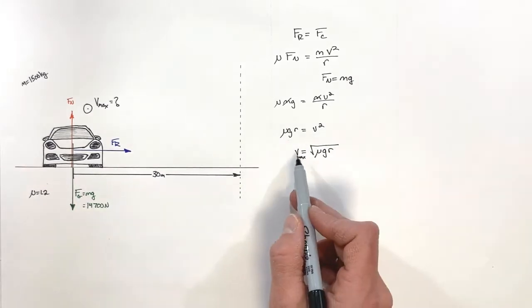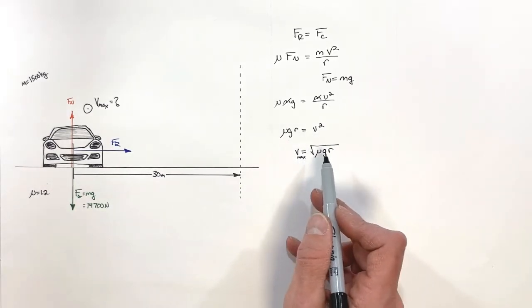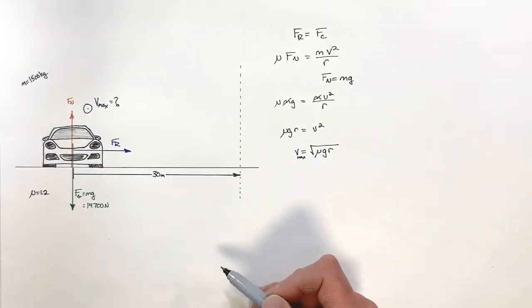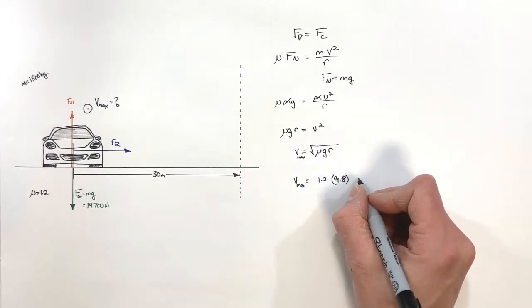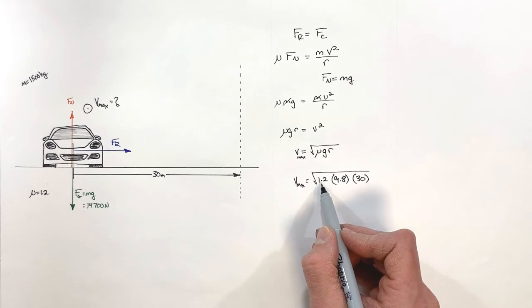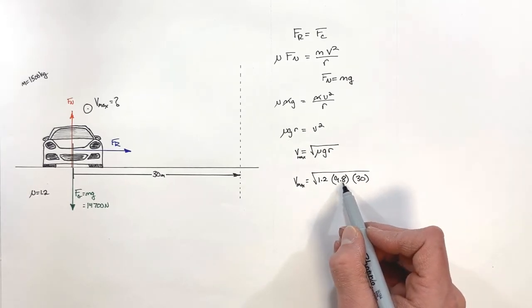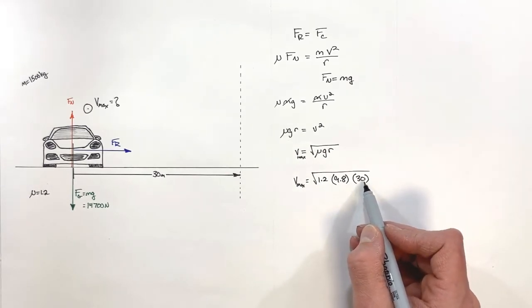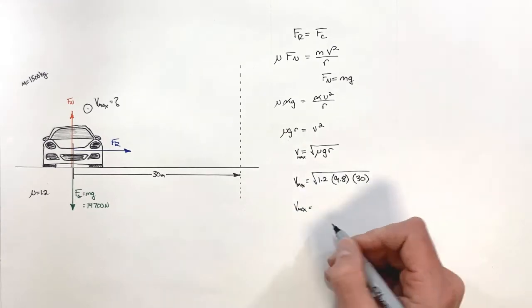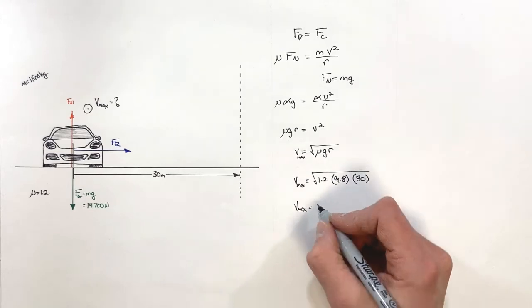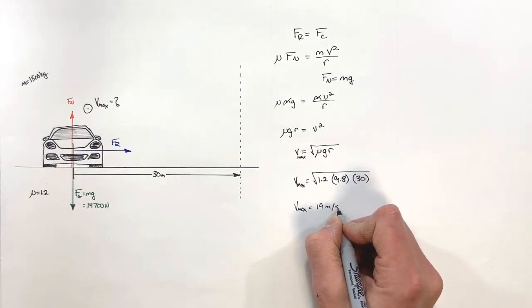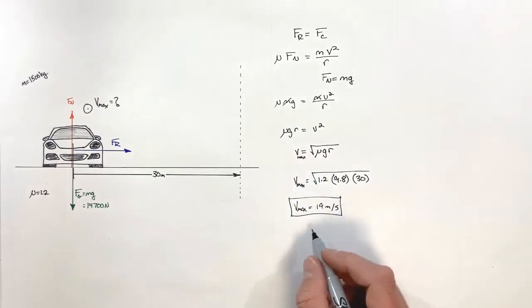If a car goes faster than whatever this value is, which we calculate, it's going to skid off the road and crash. So let's plug in some numbers and find out what we get here. Plugging in 1.2 as the coefficient of friction, 9.8 is the acceleration due to gravity, and 30 is the radius of the corner, we find the maximum velocity the car can drive around the corner is 19 meters per second.